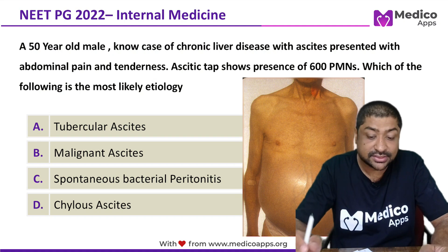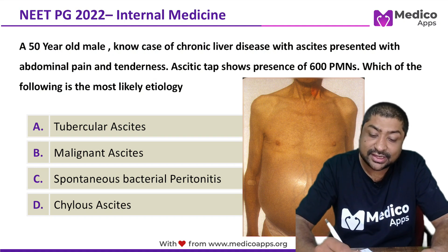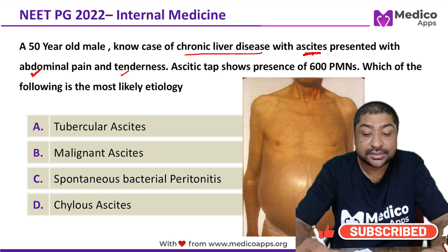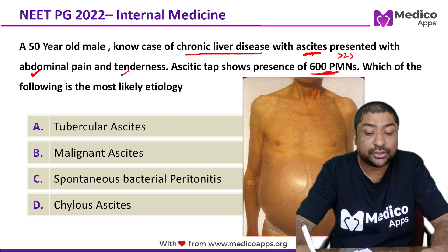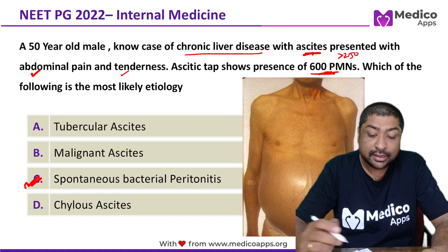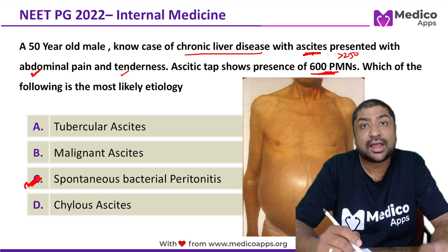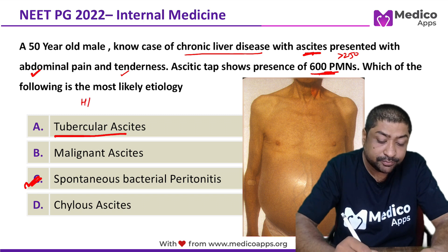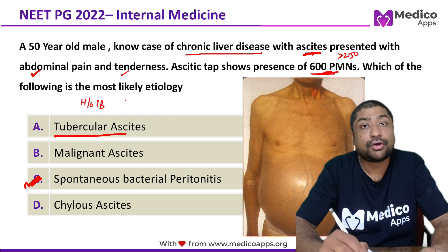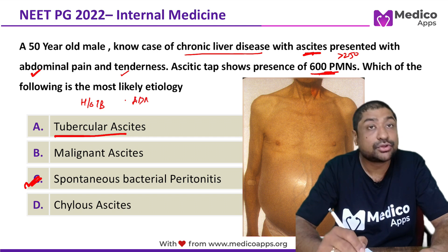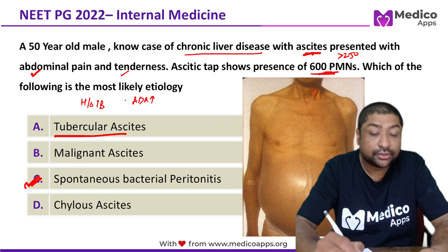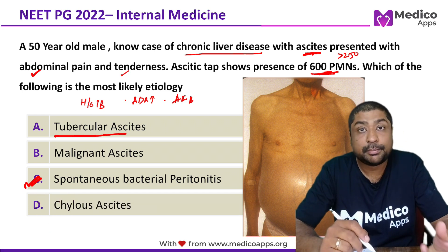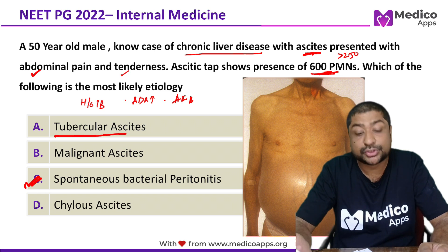Based on the question — known case of liver disease with ascites, presenting with abdominal pain and tenderness, and ascitic tap showing polymorphonuclears more than 250 — the correct answer is spontaneous bacterial peritonitis. For tubercular ascites, there would be history of TB and mention of increased ADA levels in the peritoneal tap, or acid-fast bacilli staining positive on the tap.